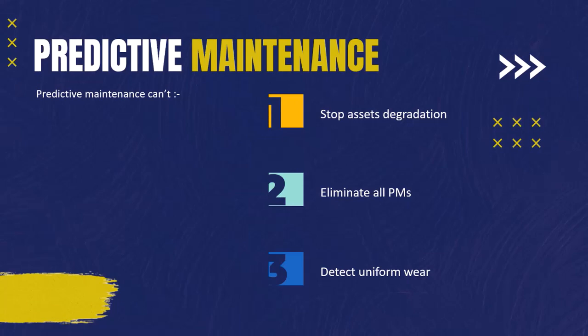Even though predictive maintenance is very important and helps eliminate many potential failures, it is important to realize that it won't stop normal degradation and doesn't replace age-based preventive maintenance. They complement each other in an overall maintenance plan. As discussed, preventive maintenance should contribute approximately 20% of planned maintenance activities. Also, predictive maintenance can't detect uniform wear in asset performance. Since predictive maintenance relies on real-time collected data, how do we collect that data? This is what we will learn in our next lecture about inspections.